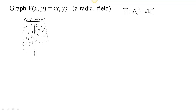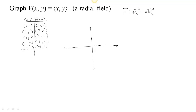This is a very simple vector field. Let's plot some of these points. The way we plot a vector field is we start at the location of the input, and then we draw a vector in the direction of the output.